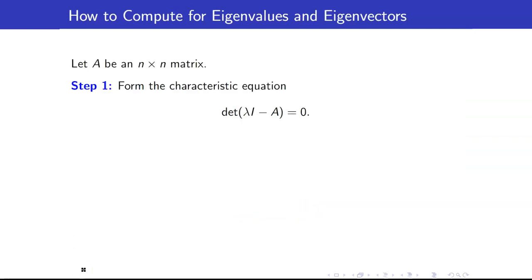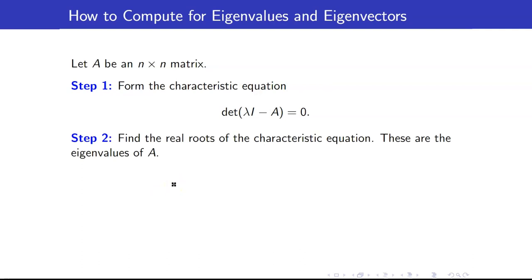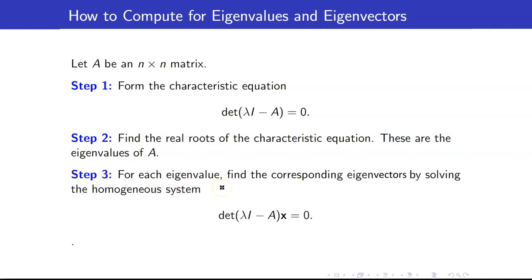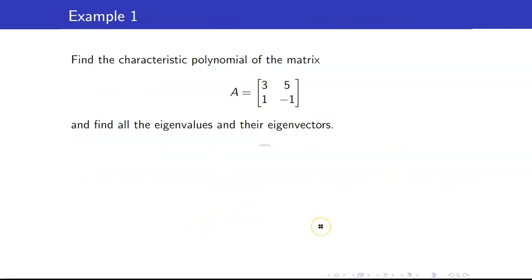Here are the steps in computing eigenvalues and eigenvectors. First, we form the characteristic equation — that is the characteristic polynomial set to 0, which is the determinant of lambda I minus A equals 0. Next, we find the real roots of this characteristic equation; these will be the eigenvalues of A. And for each eigenvalue, we find the corresponding eigenvectors by solving the homogeneous system lambda I minus A times x equals 0.